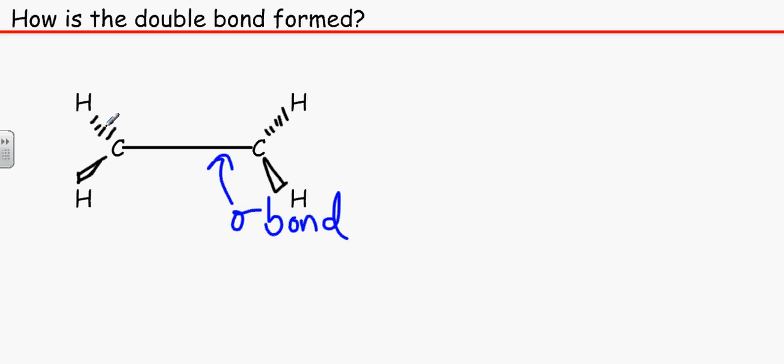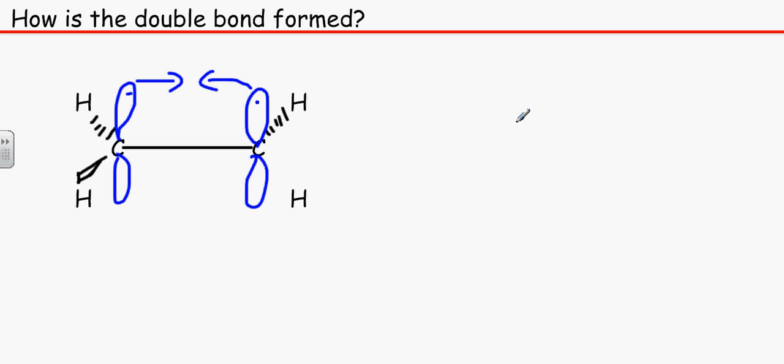We have a p orbital left over from each carbon. What basically happens is that these two parts of the orbitals lean sideways towards each other to make a sideways overlap, and it ends up looking like this. The same thing happens on the bottom, and remember the orbitals all have an electron on there.